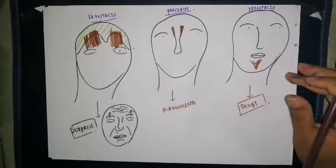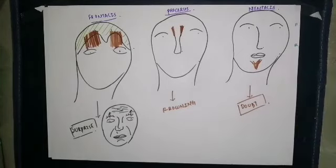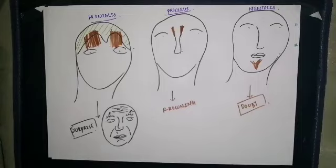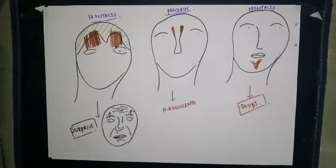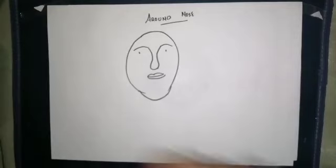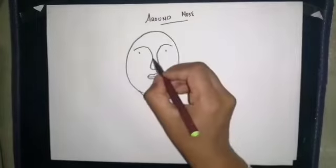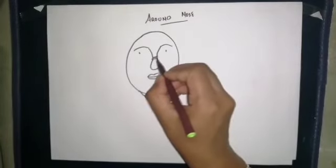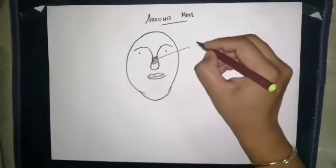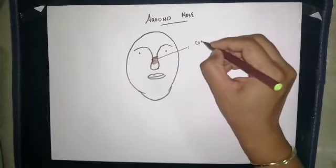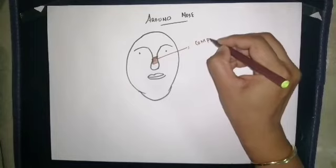The mentalis muscle contracts to produce the expression of doubt. There are also small muscles present around the nose.